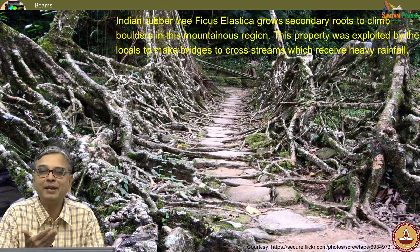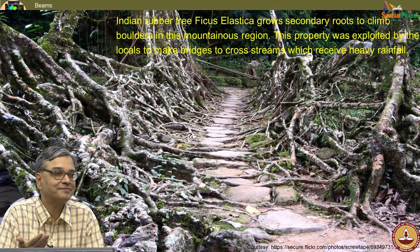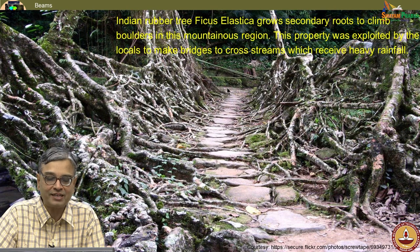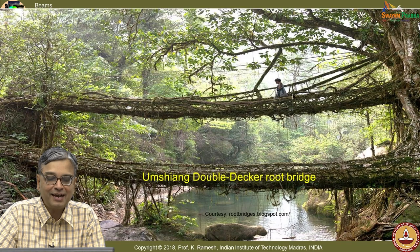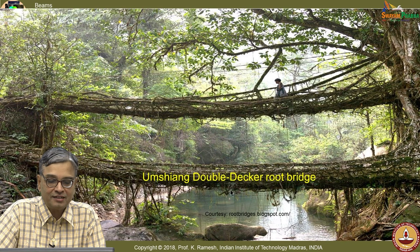The difference with these root bridges is that only humans can walk across them — that is how the bridge is constructed. It is a double-decker root bridge: the Umshiang double-decker root bridge. When there is heavy flow of water, they use the top bridge, and otherwise the bottom bridge.